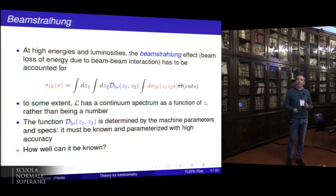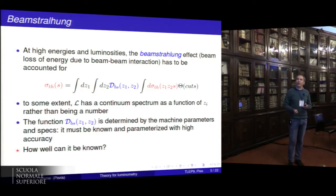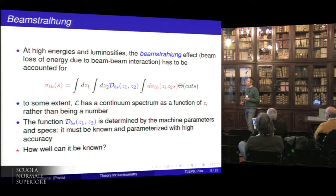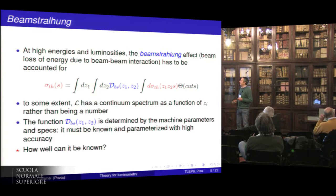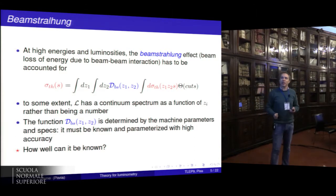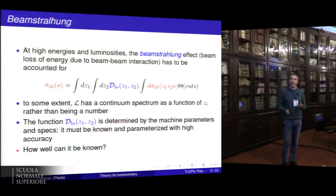Before starting the theoretical review, let me mention one point: at high-energy and high-luminosity machines, the effect of beamstrahlung has to be taken into account. The cross-section is a convolution over the beamstrahlung spectra of the theoretical cross-section. So if you want to know the theoretical cross-section with high accuracy, you should also know the beamstrahlung spectrum with very high accuracy at the level of the aimed accuracy.